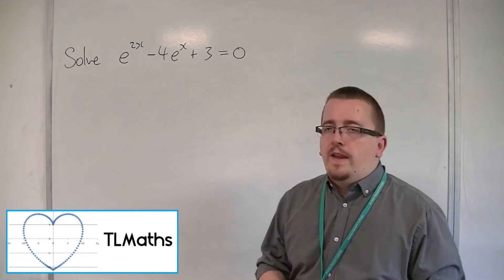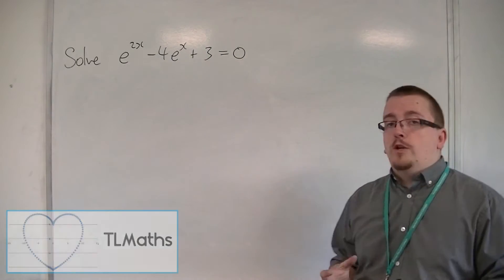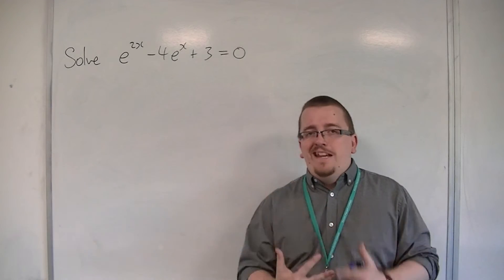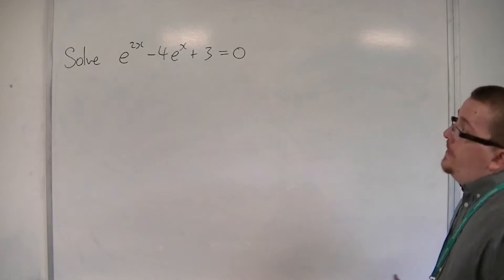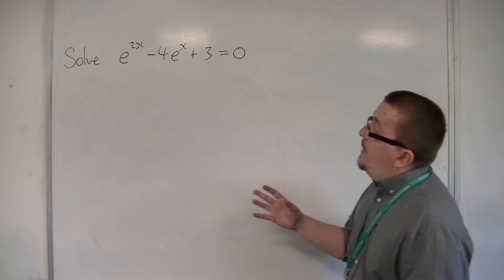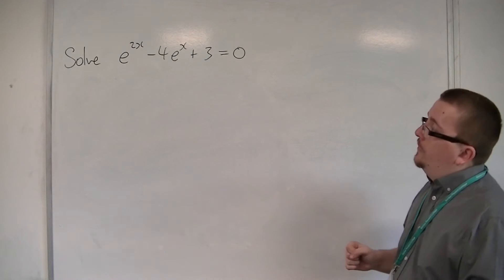So we're moving on to solving more complicated looking equations now that involve e to the x. So this is the first example: e to the 2x minus 4e to the x plus 3 is equal to 0.